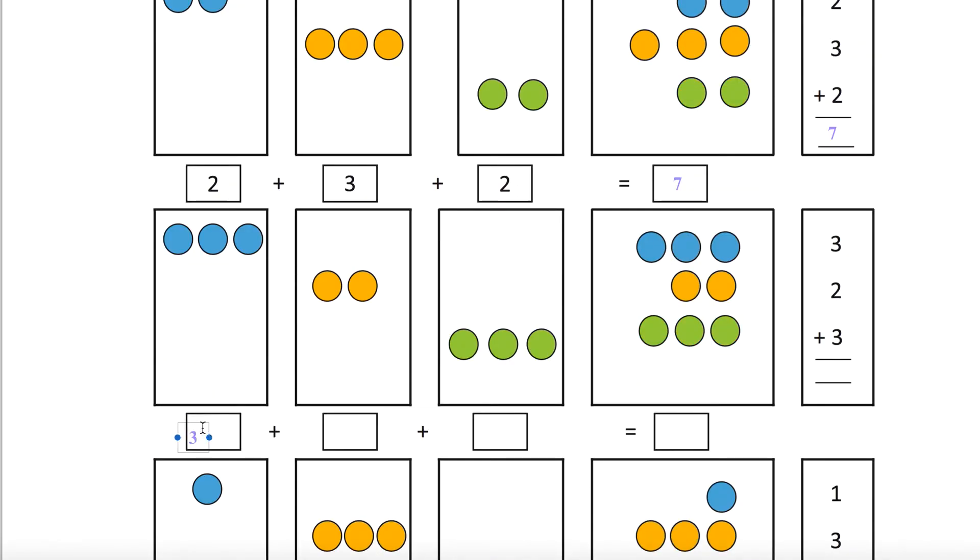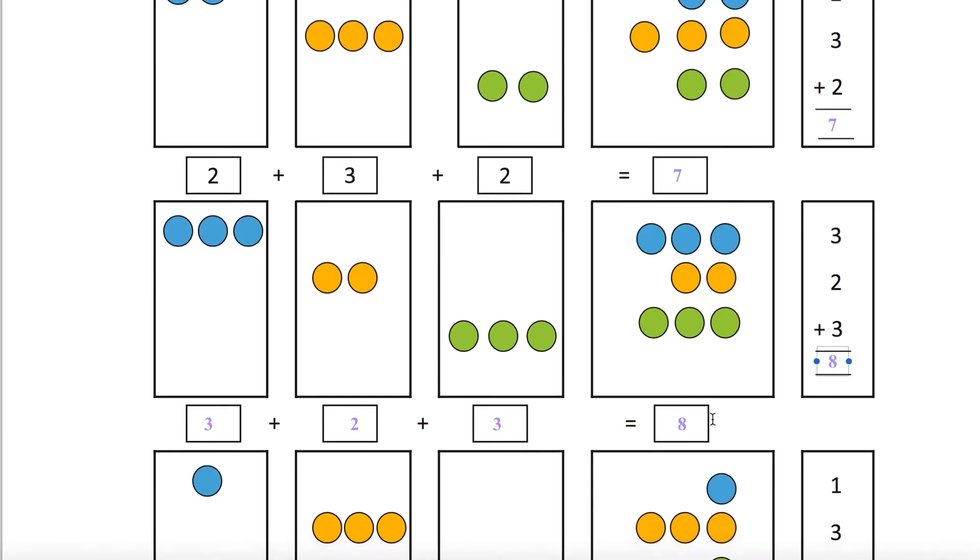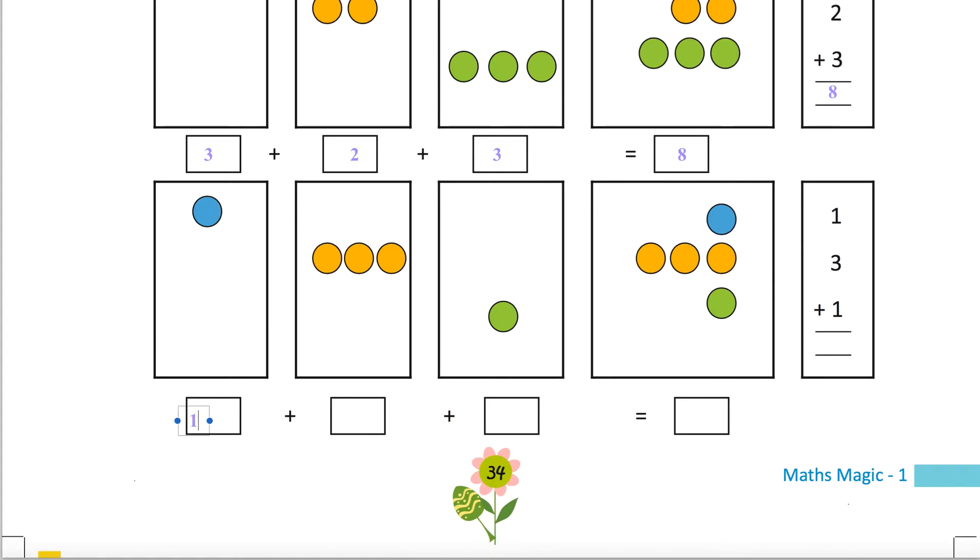This is seven, this is three. This one is two, this is again three. So three plus two is five, five plus three is eight, so this is eight. One here, three here, again one. So one, two, three, four, five plus three is four, four plus one is five.